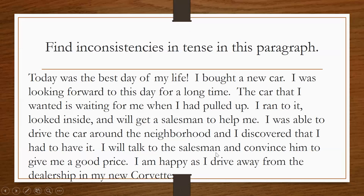'I am happy as I drive away from the dealership in my new Corvette' — present tense. We change this to 'I was happy as I drove away from the dealership in my new Corvette.' Those changes create tense consistency throughout the paragraph by switching future and present tense items to past tense. We could have written the whole paragraph in present tense instead, but since most sentences were already in past tense, we maintain consistency by adjusting the outliers.